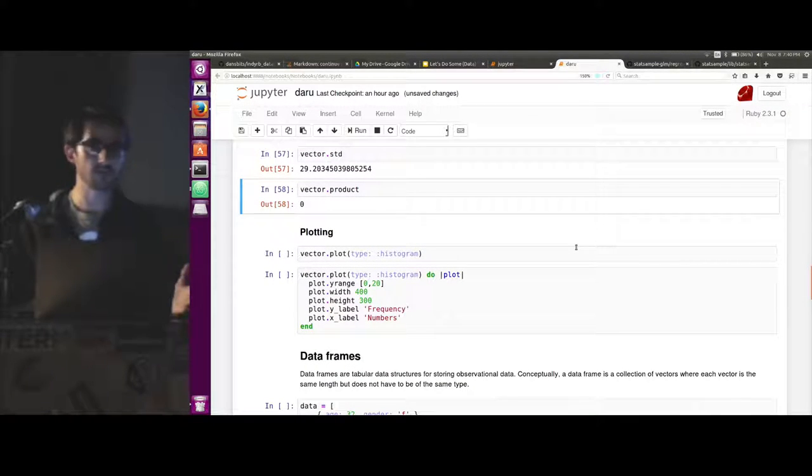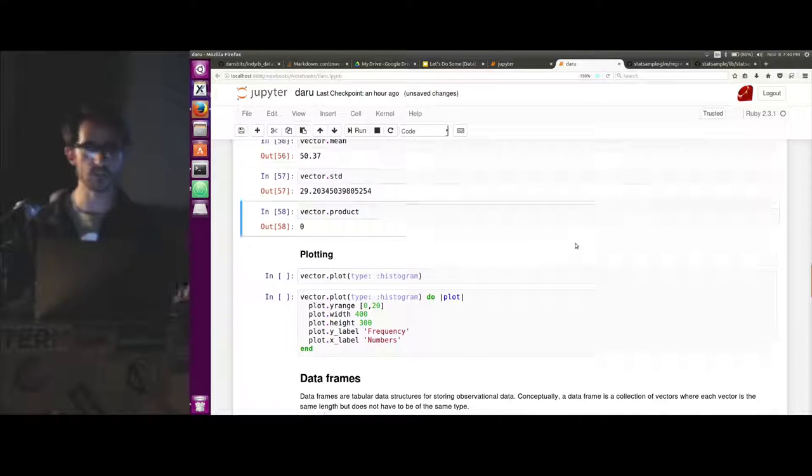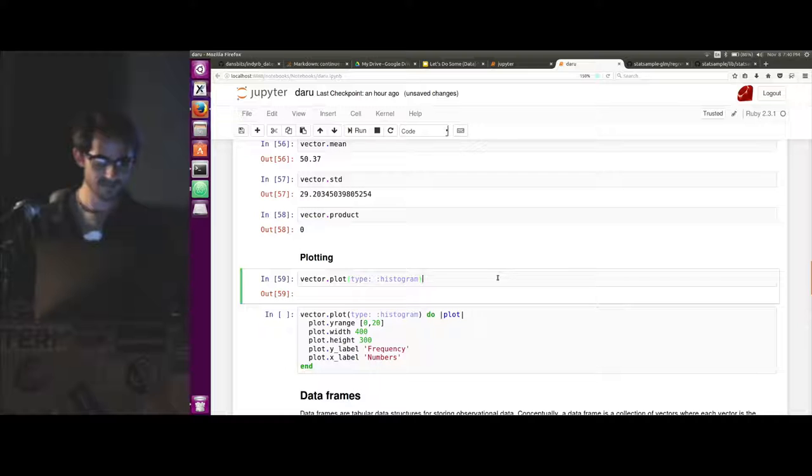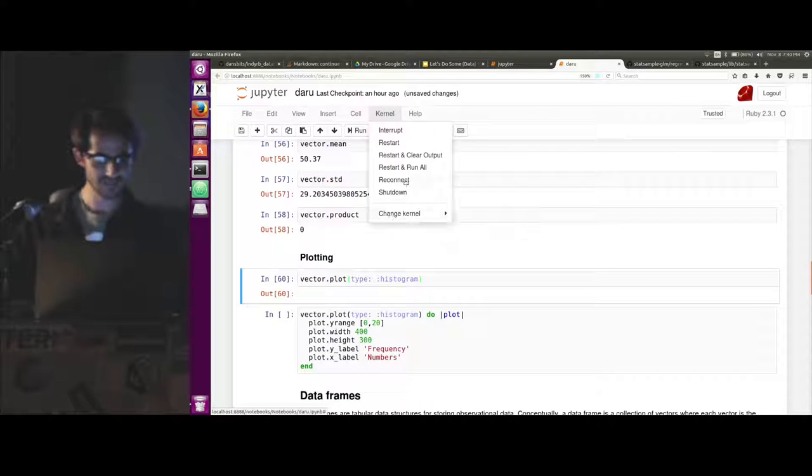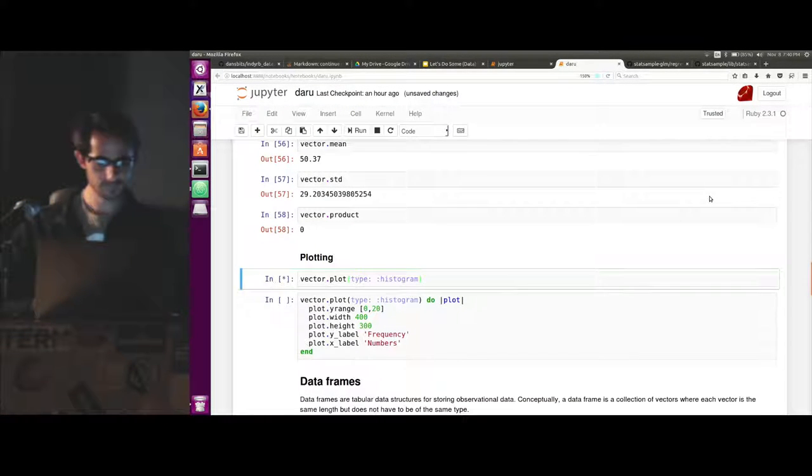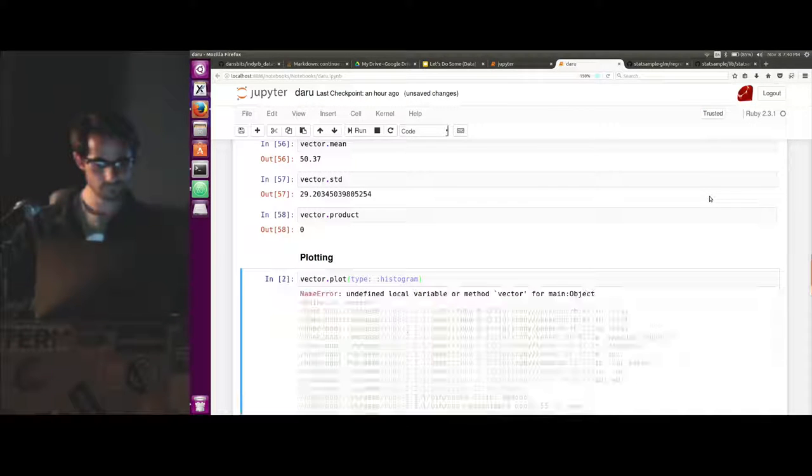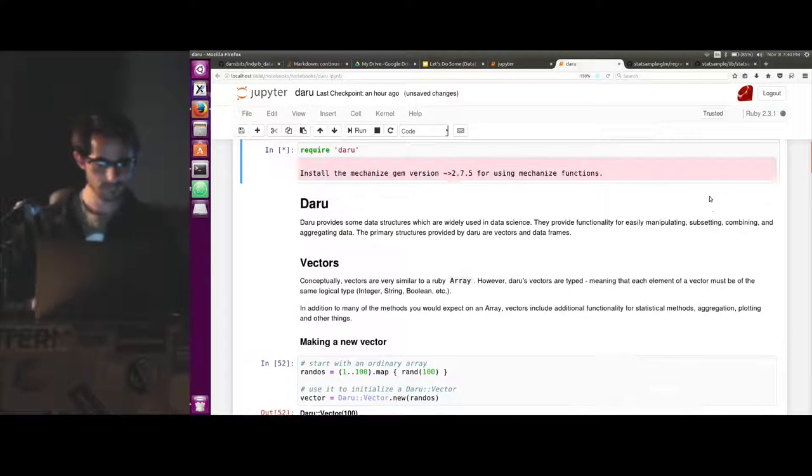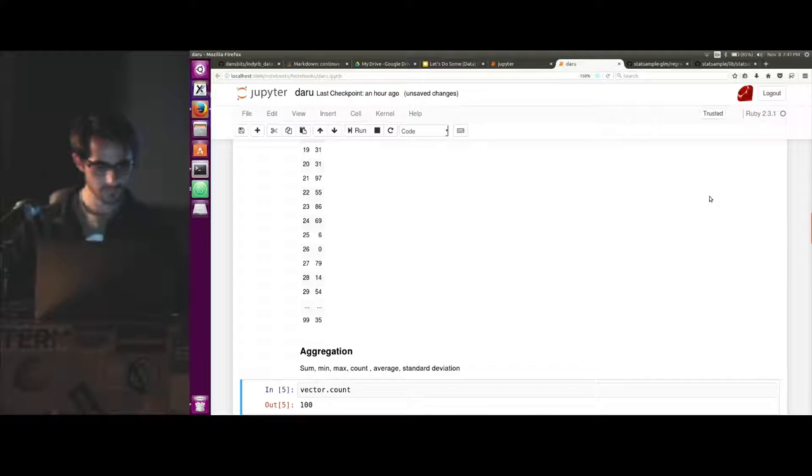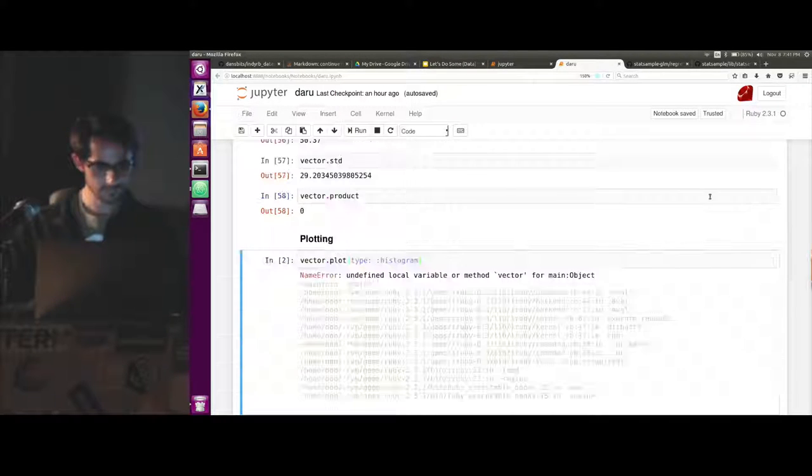The more interesting things, Daru provides some plotting functionality out of the box. So let's just say I have a hundred numbers. I want to know what the distribution of those numbers look like. I can just call plot and pass it in a hash with type histogram.